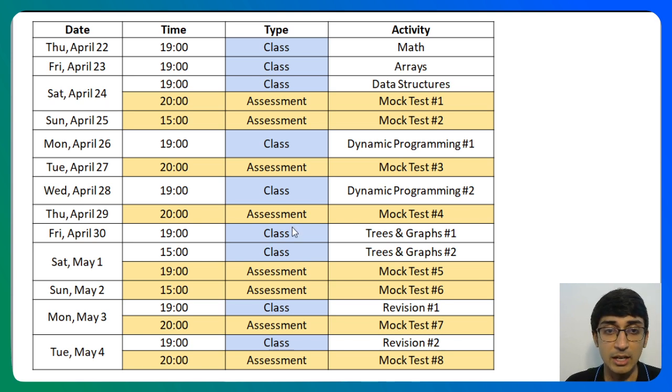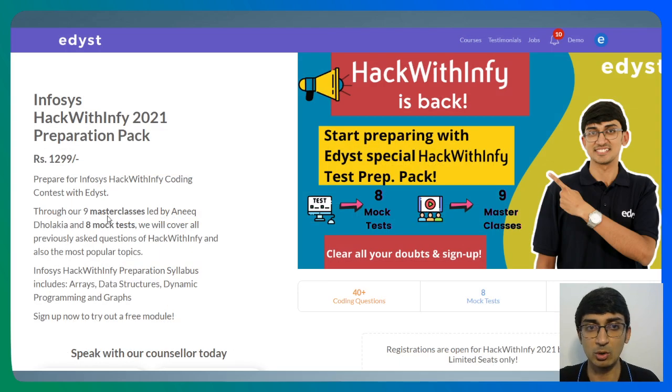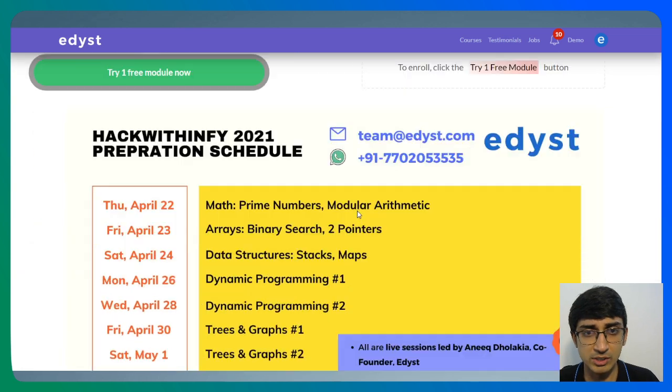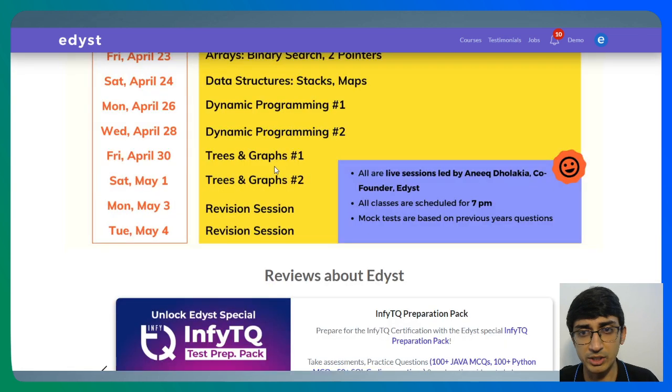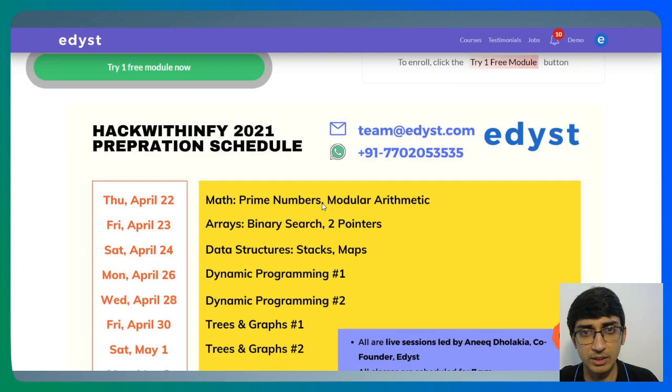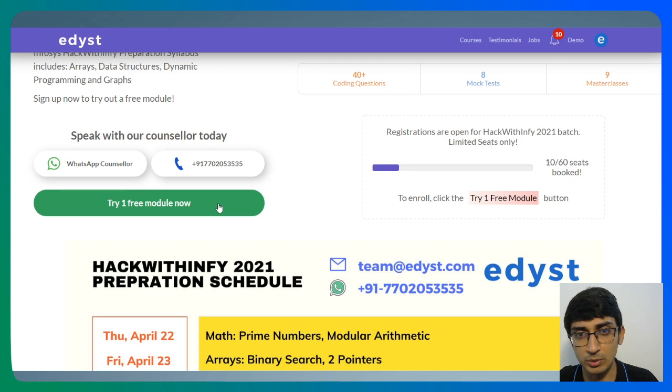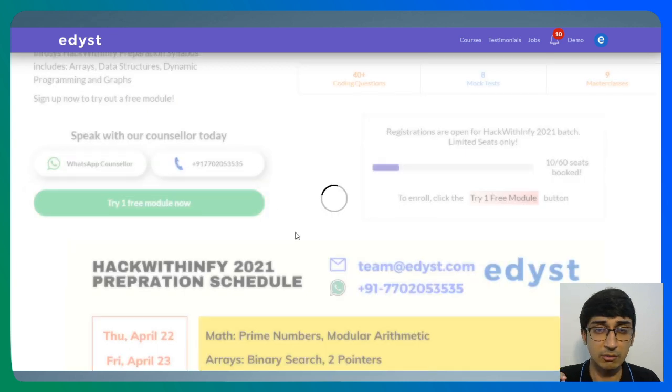How do you log into this course? Well, if you go to the link in the description below, this is the page that will open up for you. So this is the page that will open up for you. If you go to the link in the description below. So this comes up for you and you can just scroll to it. You can see this is the entire schedule once again for you. So you can check out the schedule here. The schedule is given over here and all of that, and you can click this try one free module.